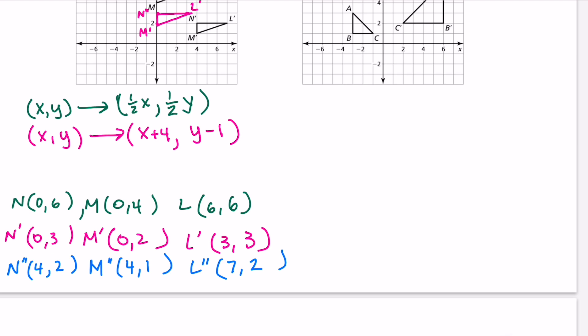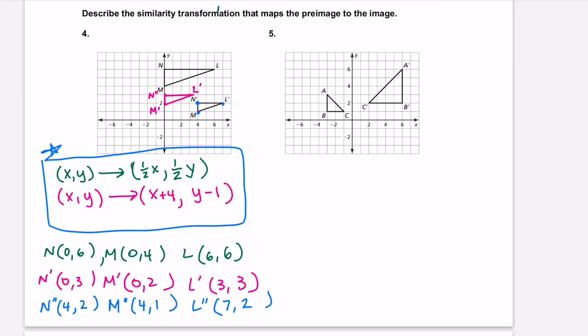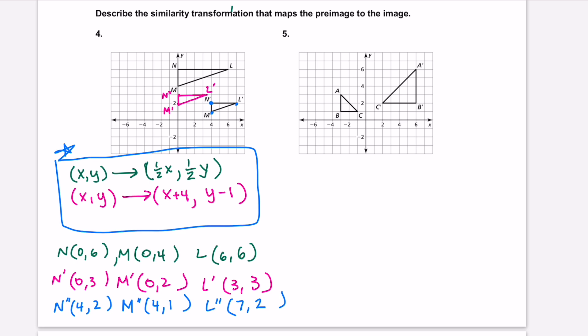Double-checking by adding 4 to each x and subtracting 1 from each y: N prime becomes (4, 2), then (4, 1), and L prime is (7, 2). All of those points add up to our end result. So this is the transformation we would apply to the original NLM figure.